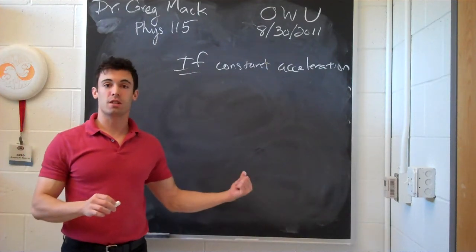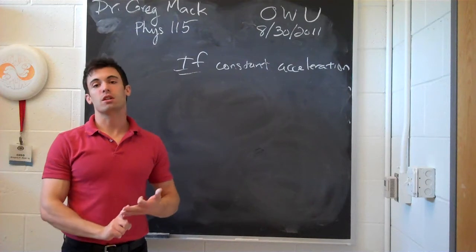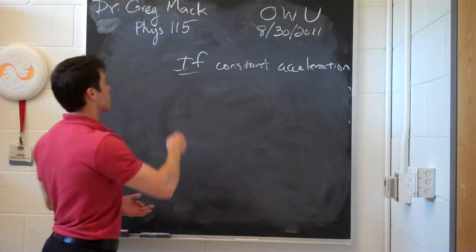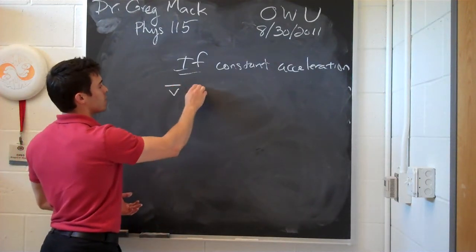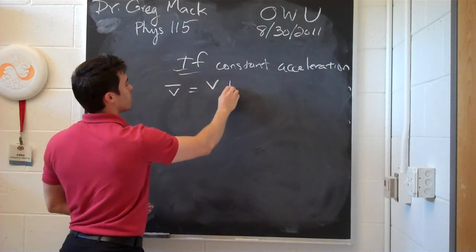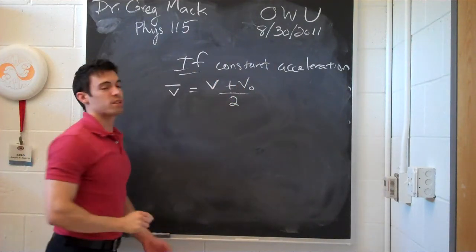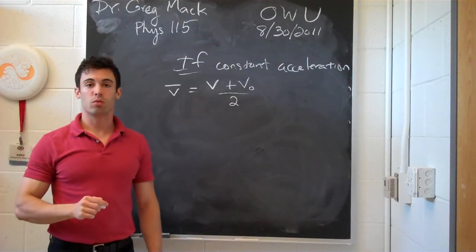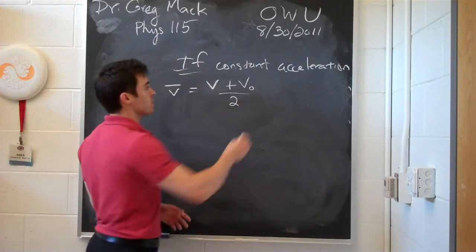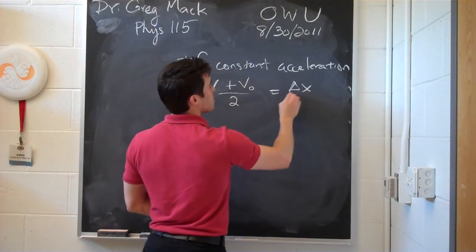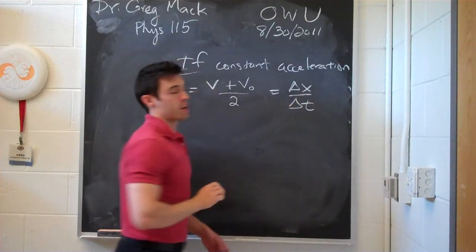then there are a few relationships you can write down for the different equations. Well, four different equations that relate a, x, v, and t. And the first thing is that if you have the average velocity, then that is just going to be equal to the two velocities you have divided by two. Which also is equal to delta x over delta t.